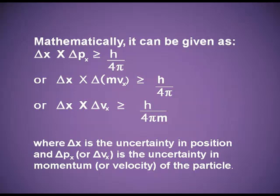Delta x is uncertainty in position. Delta p is uncertainty in momentum. Since momentum is the product of mass and velocity, we can also write it as m delta v — m is not given a delta because mass is a constant quantity. Delta v is the uncertainty in velocity, and h is Planck's constant. For numerical purposes, we remove the greater-than-or-equal-to sign and replace it with equals to. A common mistake is writing 2 pi instead of 4 pi.